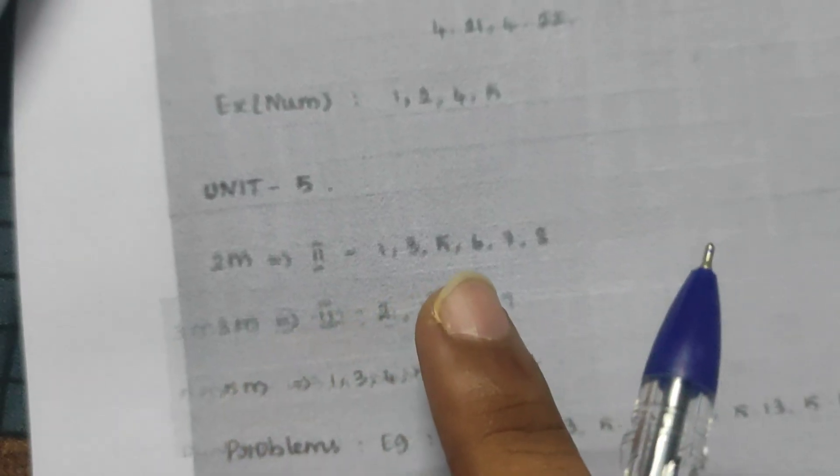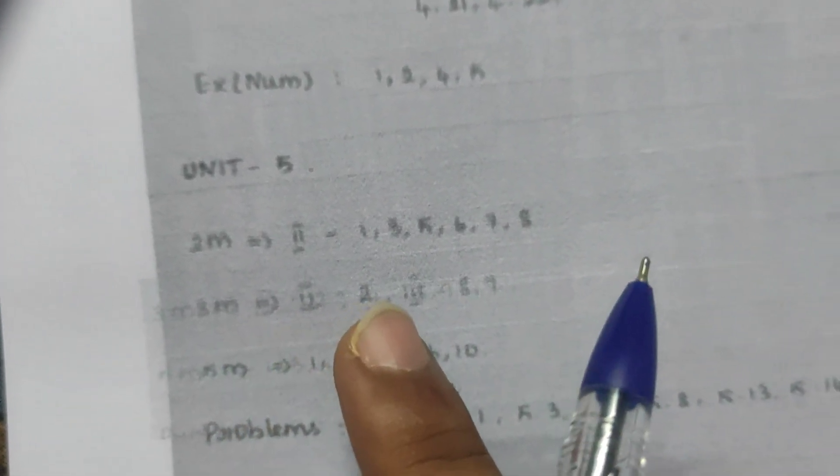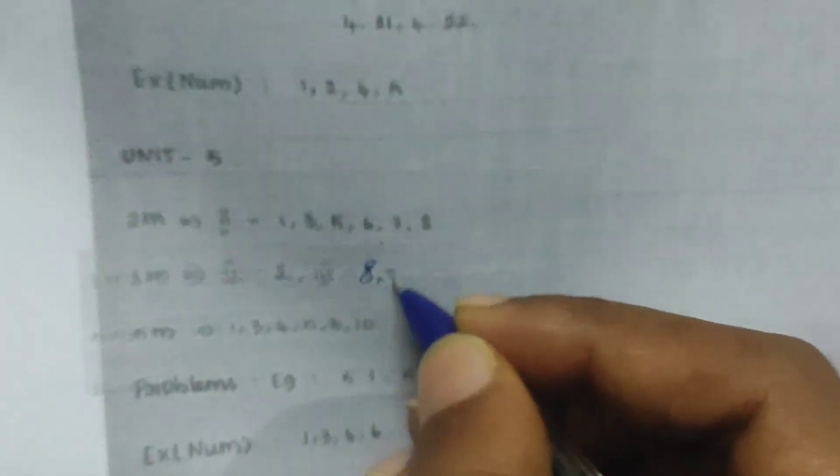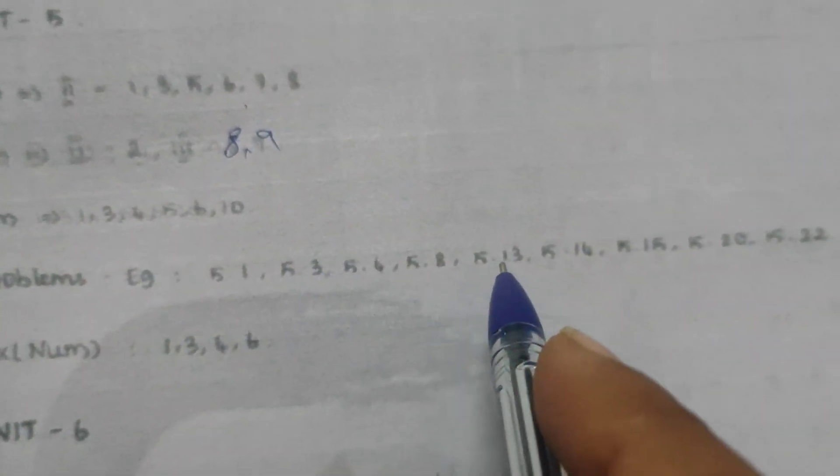Unit 5: 2-mark questions — 1, 3, 5, 6, 7, 8. 3-mark questions — 2, 3, 8, 9. 5-mark questions — 1, 3, 4, 5, 6, 10. Problems: 5.1, 5.3, 5.4, 5.8, 13, 14, 15, 20, 22. Exercise numbers 1, 3, 4, 6. Next: unit 6.